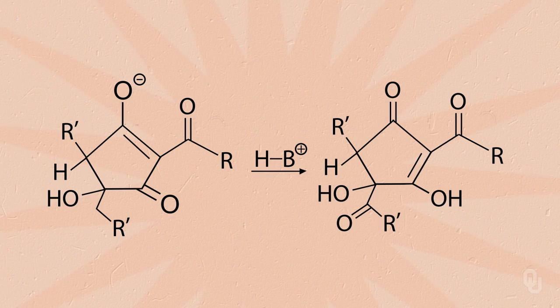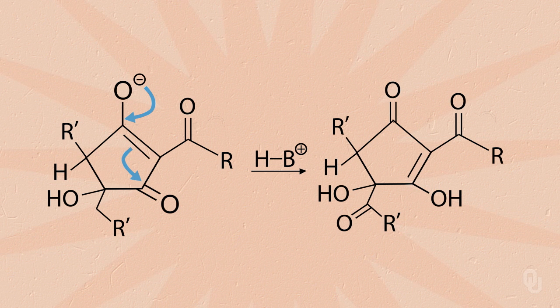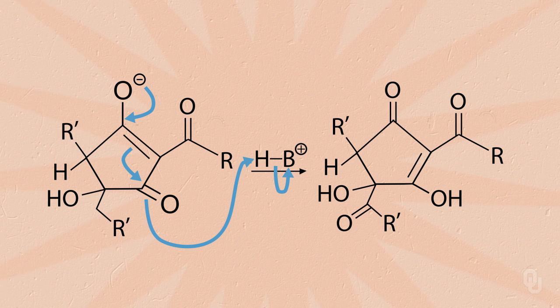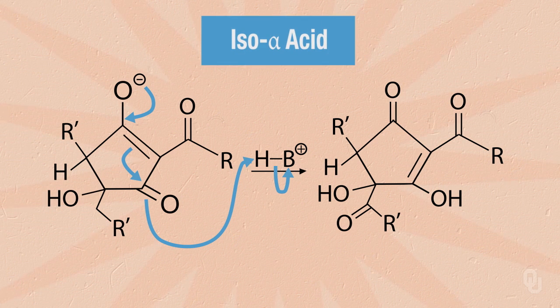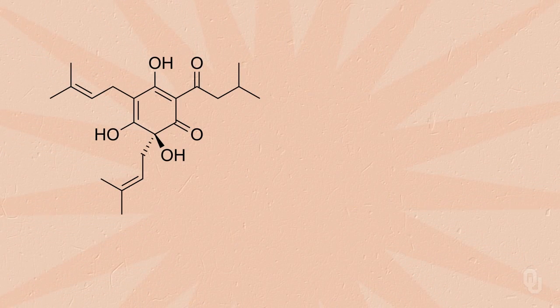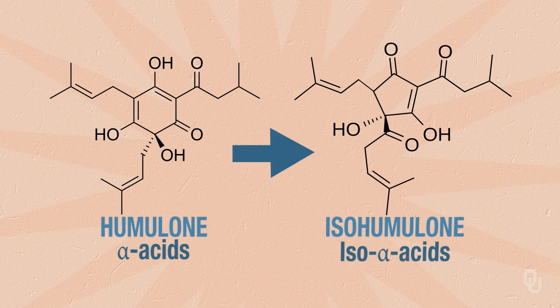Now we're almost done, but notice that we still have our delocalized anion. To show how this finally gets to our final product, I'm going to take this delocalized product and put it as one of the resonance structures we saw before, and we're going to do a proton transfer. Electrons come down from the oxygen, we get a migration of our pi bond towards the bottom carbonyl, electrons from that carbonyl go out and pick up a proton, and we give the electrons back to whatever the host was — and we get our final iso-alpha acid. So again, the process: proton transfer, tautomerization, an alpha-ketol rearrangement, and then another proton transfer to finish. This is how we go from our alpha acids, such as humulone, to our iso-alpha acids, such as isohumulone. Not an overly complex process, but very important to the flavor of our beer.